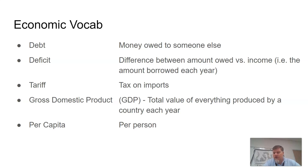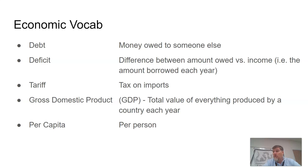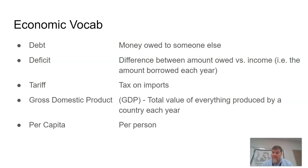A tariff is a tax on imports — you should be familiar with that term already, and you'll continue to hear about tariffs throughout the rest of the year. Gross domestic product, often seen as GDP, is the total value of everything produced by a country each year. It's not how much we collect in taxes; it's how much we produce of value in the nation. That includes both physical goods and non-tangible things like software — you can't touch software, but it is produced and is part of our GDP.